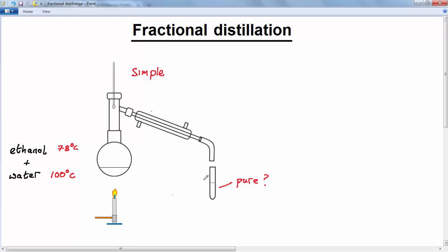Now, if we want to get a pure sample of ethanol here, then we have to use a different technique, and this technique is called fractional distillation. And so to do that, we're going to modify our apparatus. And our new apparatus is going to look like this.